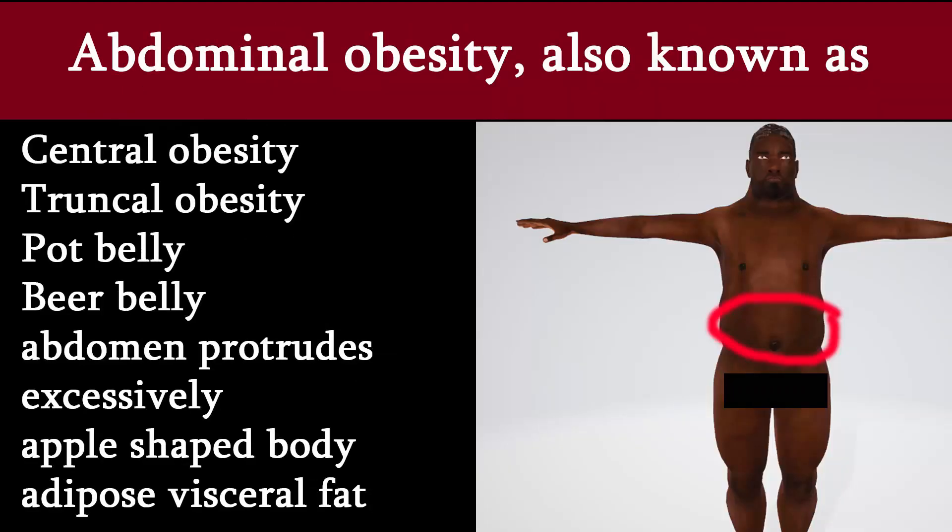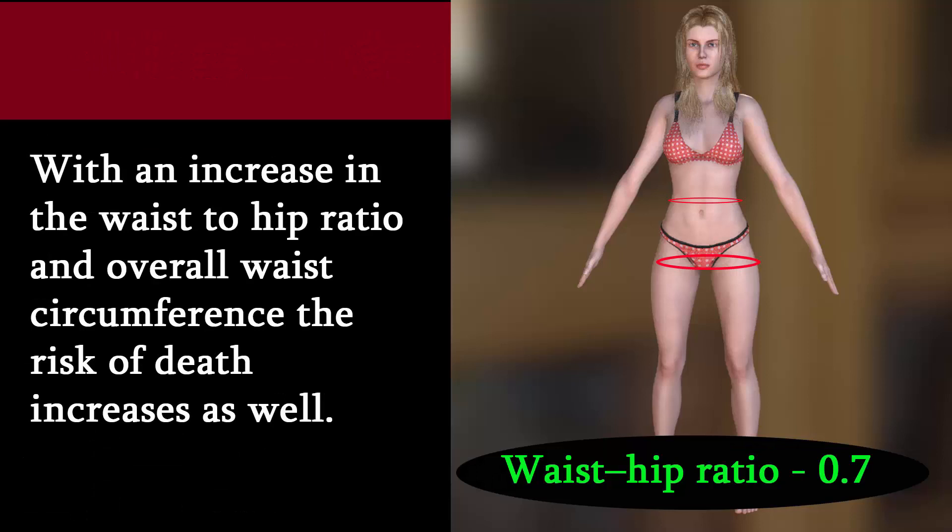An excess of adipose visceral fat is known as central obesity, the fat belly or beer belly effect, in which the abdomen protrudes excessively. This fatty type is also known as apple-shaped, as opposed to pear-shaped, in which fat is deposited in the hips and buttocks.